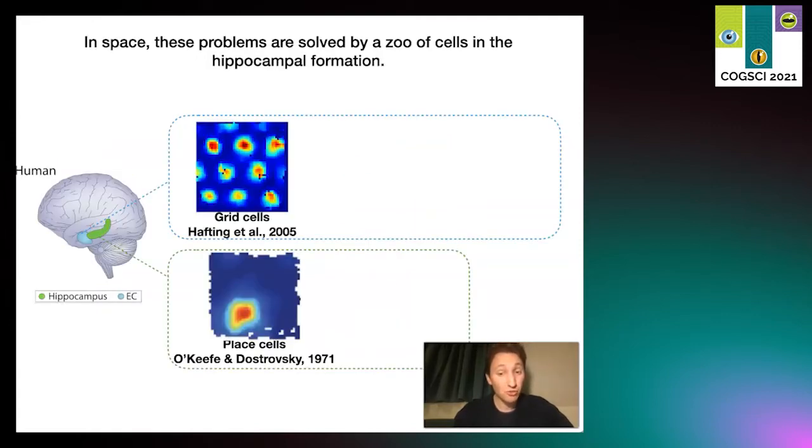More recently, we've got an idea of how neurons in the brain represent this cognitive map. At the bottom in hippocampus, place cells were found in the 1970s. This is one cell that fires only at a particular location in this box, indicated by this rate map. Right above that are grid cells in entorhinal cortex.